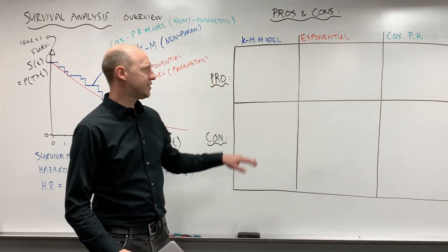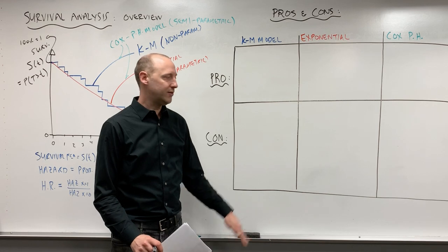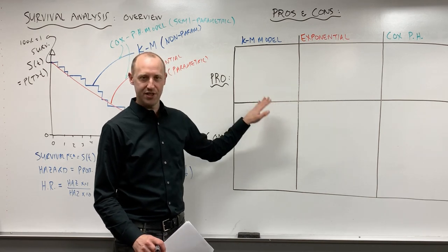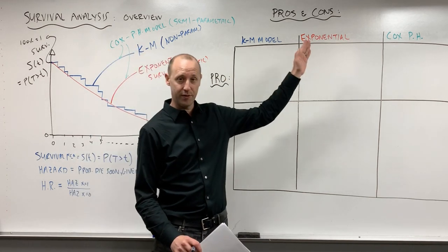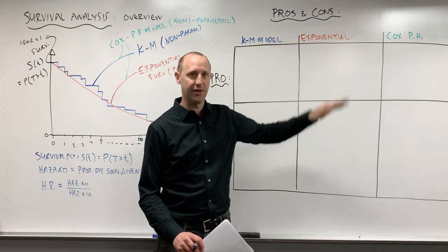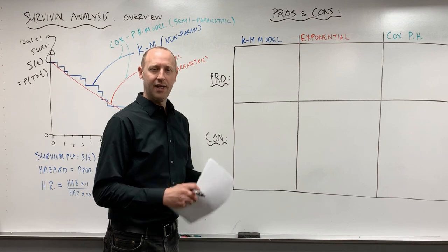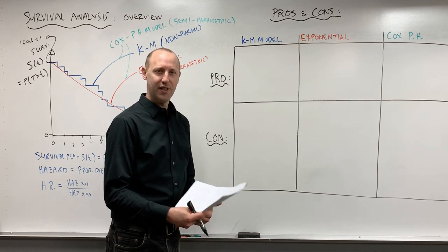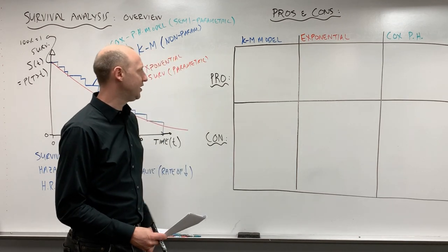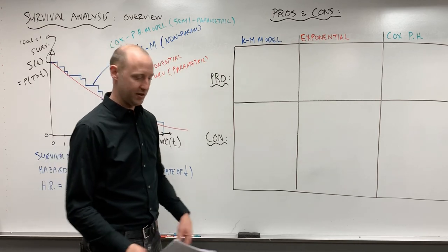So what we want to do while we're at this big picture level is think about what are the pros and cons of each of these different models: the Kaplan-Meier, the exponential, and Cox proportional hazard model. They'll be a bit abstract and they'll kind of flesh themselves out as we talk about each of these models on their own.